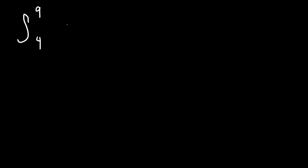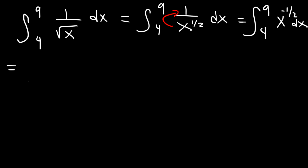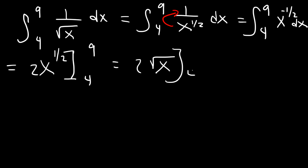Let's find the value of one more definite integral. First rewrite the expression: the square root of x is the same as x to the one-half. Moving x to the top gives x to the negative one-half. Using the power rule: negative one-half plus one is positive one-half. Dividing by one-half is the same as multiplying by 2. The whole expression becomes 2x to the one-half, evaluated from 4 to 9, which we can convert back to the square root symbol.